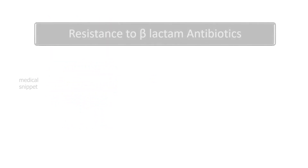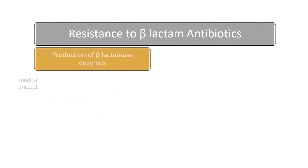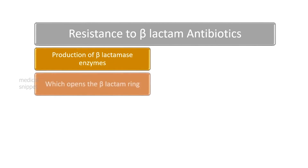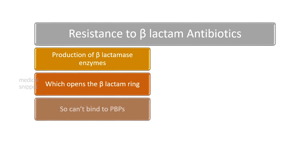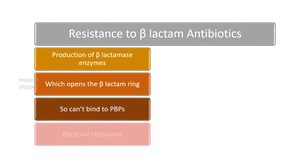Let's see how bacteria develop resistance to beta-lactam antibiotics. The first mechanism is by production of beta-lactamase enzymes, which open up the beta-lactam ring in the antibiotic so it cannot bind to the penicillin-binding proteins. Thus, the bacteria are resistant to beta-lactams.